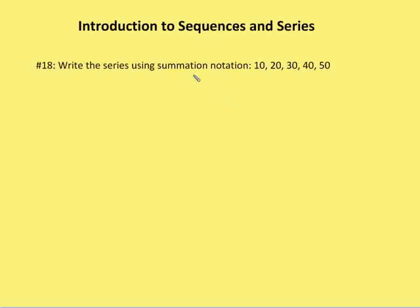The next problem, we're asked to write a series using summation notation. So remember, summation notation is represented by the Greek letter sigma. I write in, my letter here can be whatever letter I want. I'm going to start with the value one, and I notice that I have five terms in this particular sequence. And it looks like for each term, I'm multiplying i times 10. So I have 10, 20, 30, 40, and 50.